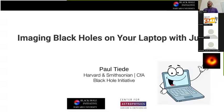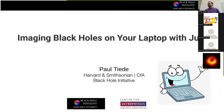If you were here for the first part, we heard about things like how the EHT actually makes pictures of black holes, real-time data processing using Julia for radio astronomers, and also how you can use Julia to find aliens. Now I'm going to talk about more work on EHT that I've been doing — how we can use Julia to image black holes on our laptop.